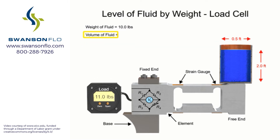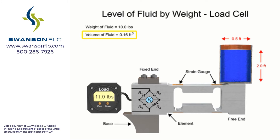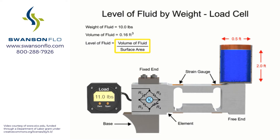The volume of the fluid is then derived by dividing the fluid weight by the density of the fluid. The level of the fluid is finally calculated by dividing the volume of the fluid by the surface area.